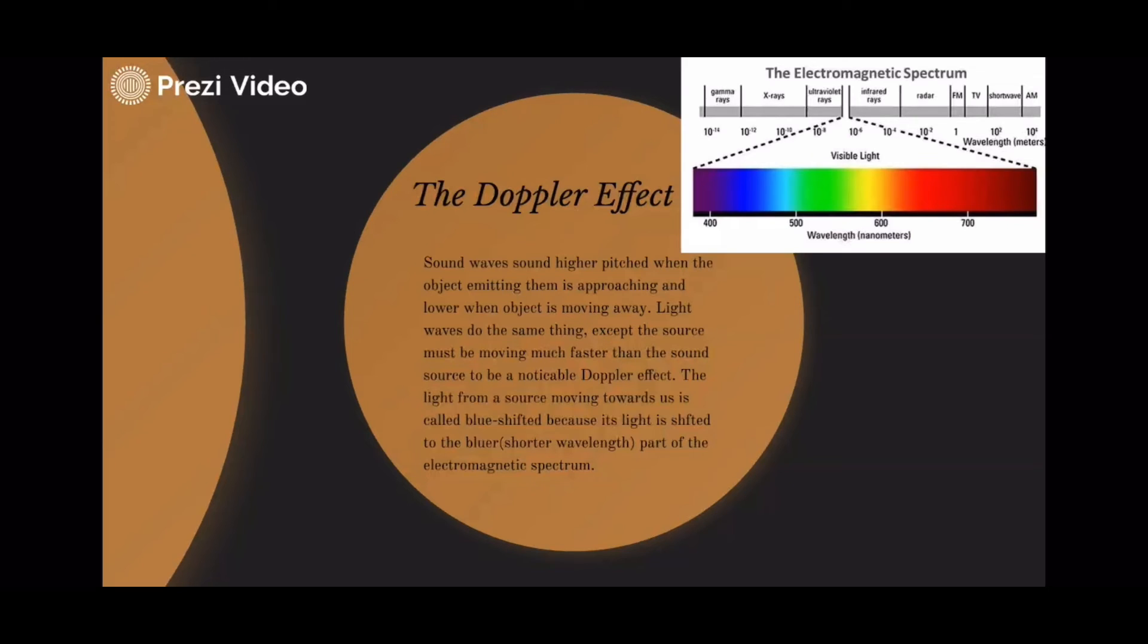The light from a source moving towards us is called blue-shifted because its light is shifted to the bluer, shorter wavelength part of the electromagnetic spectrum.